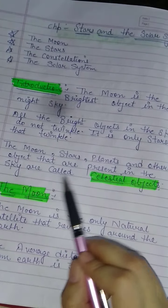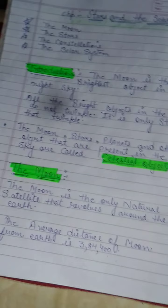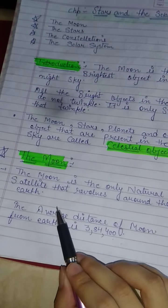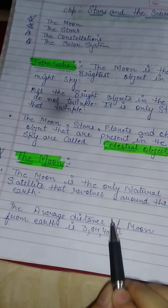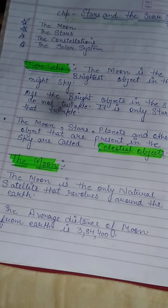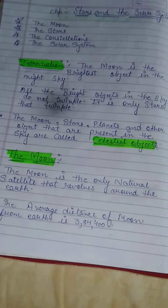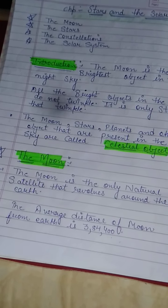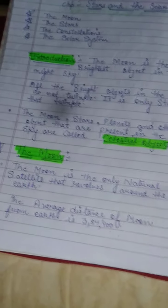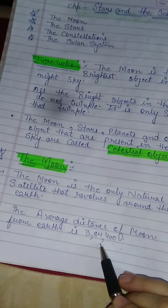The Moon is the only natural satellite that revolves around the Earth. If asked which is the natural satellite that revolves around the Earth, the answer is the Moon. The average distance of the Moon from the Earth is 384,400 kilometres.